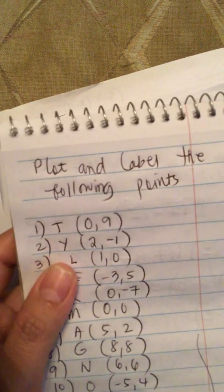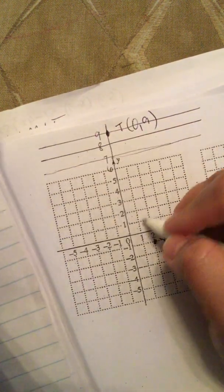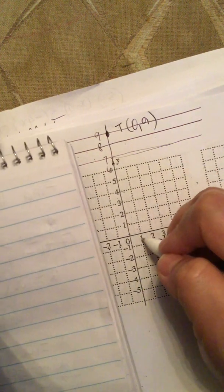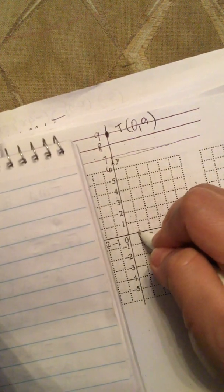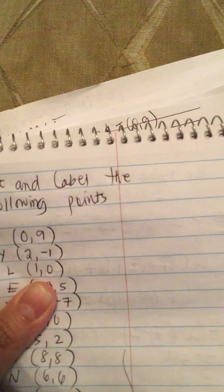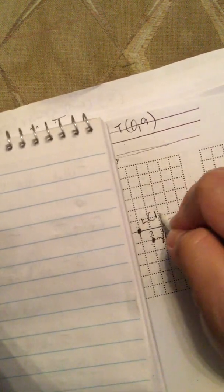The next point is one comma zero. One comma zero is this one, right here. So this is the point one comma zero.